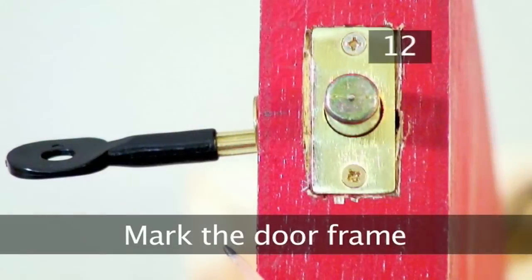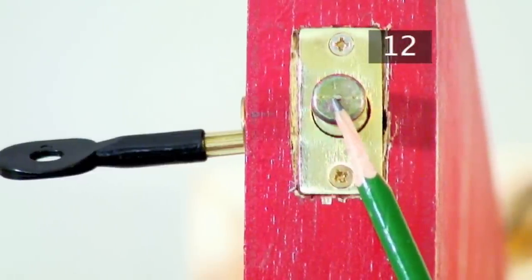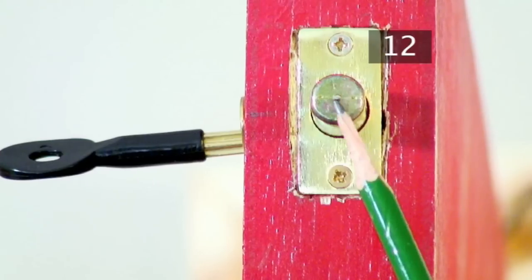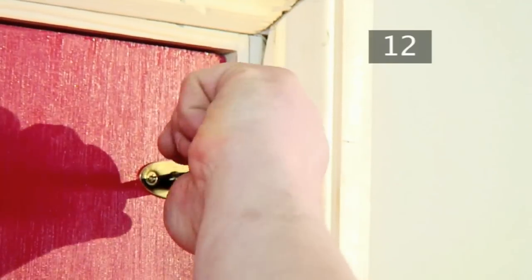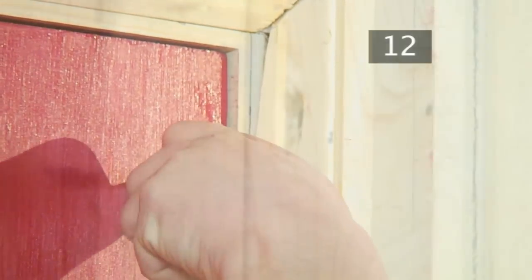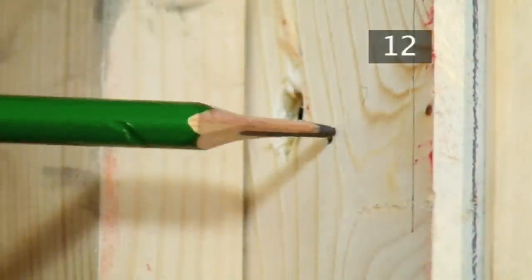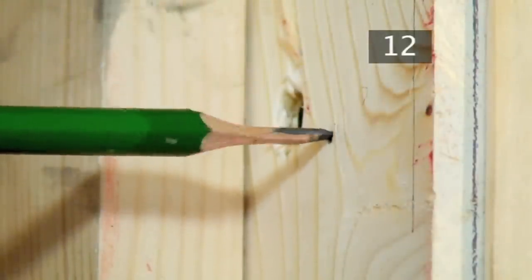Step 12. Mark the bolt on the door frame. There's a small pimple at the end of the bolt. Close the door and turn the key firmly to wind open the bolt. Turn it back and open the door. You will be able to see the indentation from the pimple on the door frame. This mark shows you where to drill the bolt hole recess on the door frame.